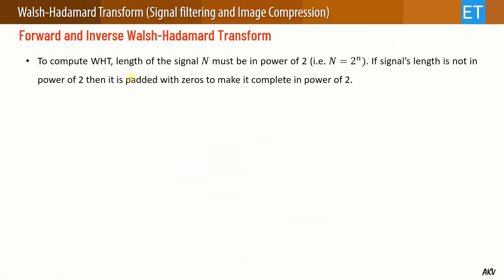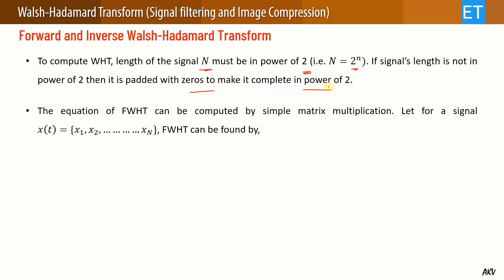To compute this transform, the length of the signal N must be a power of two — that is the requirement. If the signal length is not a power of two, it can be padded with zeros to make it a complete power of two.